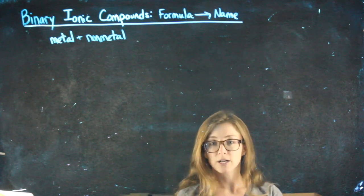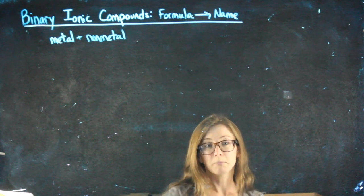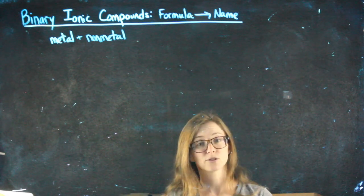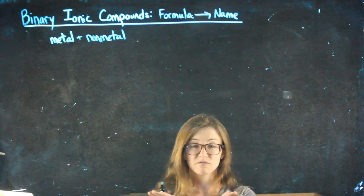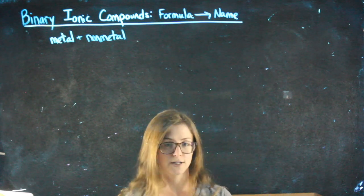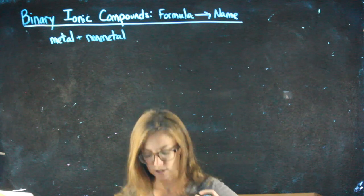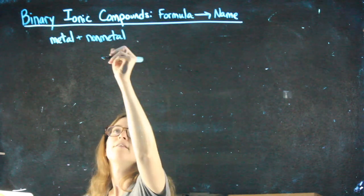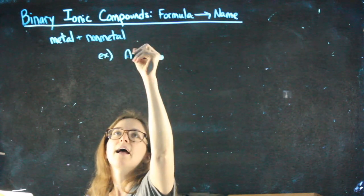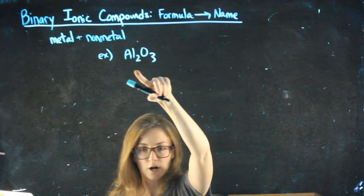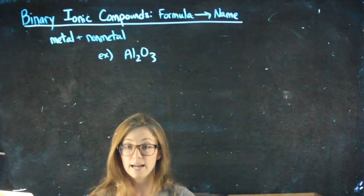The naming system we're going to use for this is going to matter for every other type of thing we end up naming. This is the most fundamental naming structure you need to know. An example - I think learning these through examples makes the most sense. Let's say I have Al2O3. That's a chemical formula for a compound. And I ask you to name it.